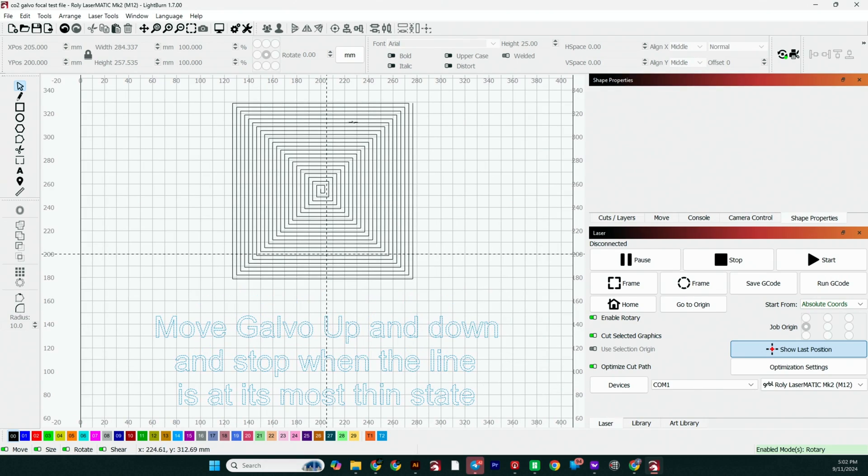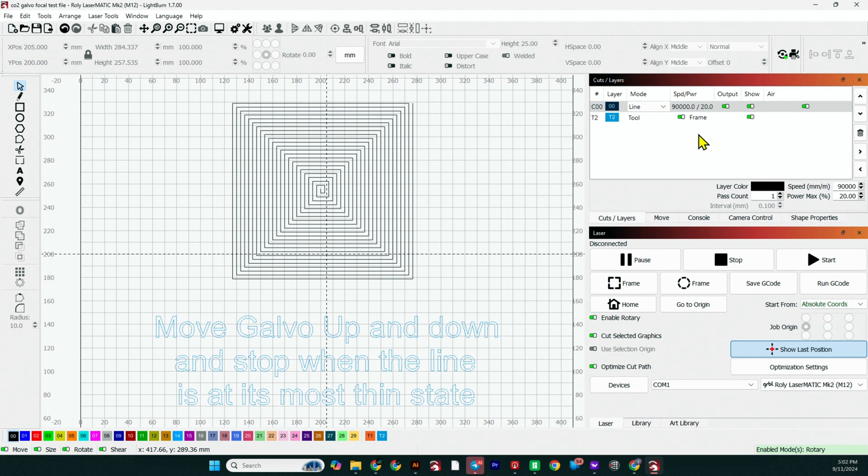So let me show you the file real quick. What I have is a single line squared spiral. So this is one line that runs all the way around. And for the layers, I have just one layer set up. It runs a line and the setting that will be preloaded will be for a CO2 Galvo laser, 30 watt, and I'm running a 200 or 175 millimeter lens.